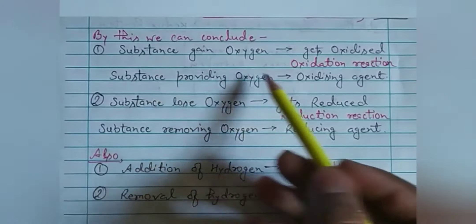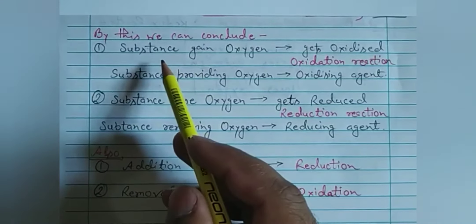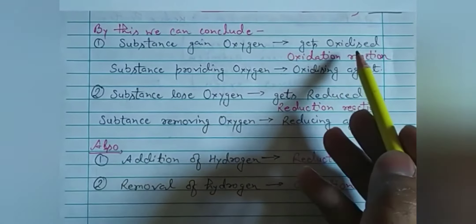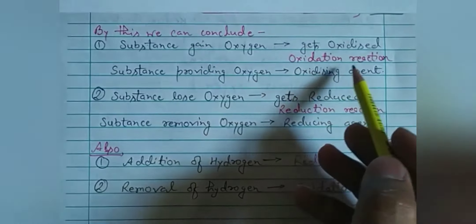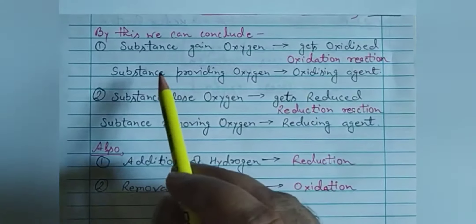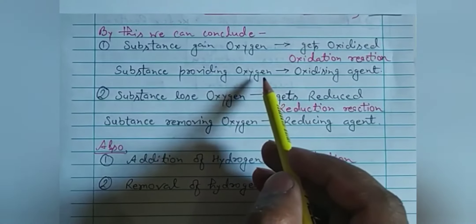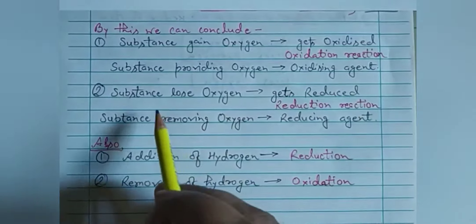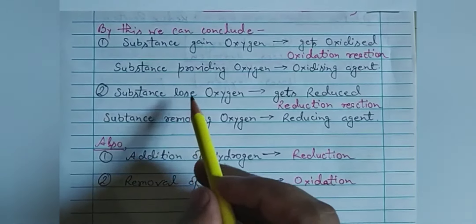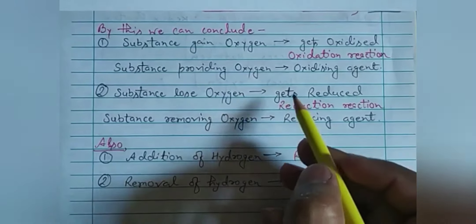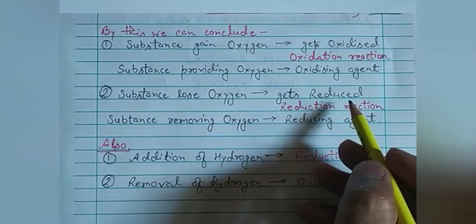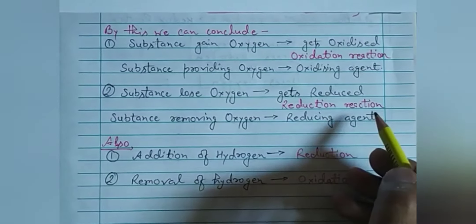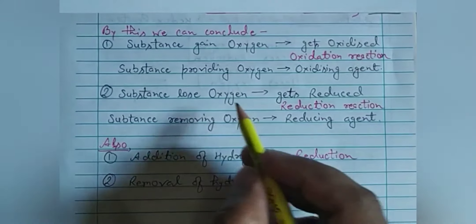From the study of redox reactions we can conclude: if any substance gains oxygen, it is getting oxidized and that reaction is an oxidation reaction. The substance providing oxygen is called the oxidizing agent. The substance that loses oxygen is getting reduced, that reaction is called a reduction reaction, and the substance which removes oxygen is called the reducing agent.